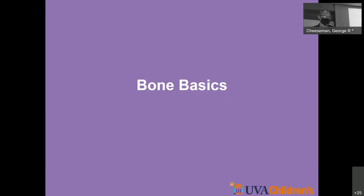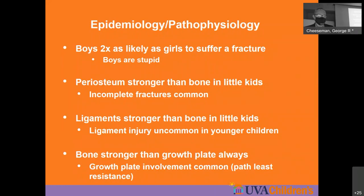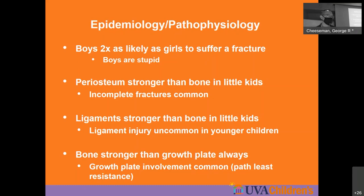From an epidemiologic standpoint, boys are much more likely to suffer from a fracture than girls — because boys do stupid things. I have a 7-year-old and I can assure you he does stupid things on an hourly basis. Their periosteum is a lot stronger than the bone, and that's going to result in incomplete fractures. In really small children, say under 10, their ligaments are stronger than the bones too. So it's very uncommon for a young child to have a sprain or ligamentous injury, because the bone or growth plate tends to give out before the ligament does.